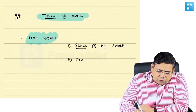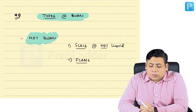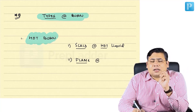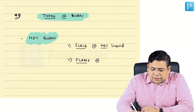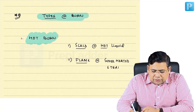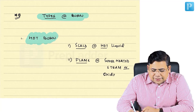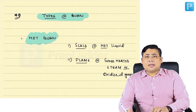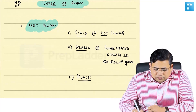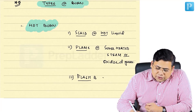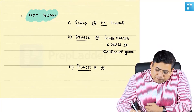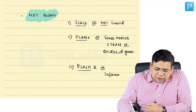The second is flame burn. A flame burn is burn caused by the damage induced by superheated steam or the oxidized gases around the flame. The third important type is flash burn — this is any burn associated with inflammable substances.